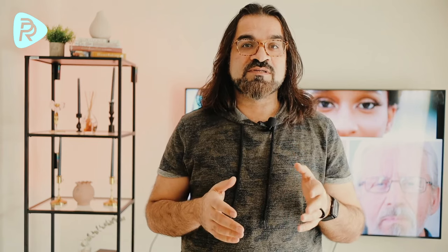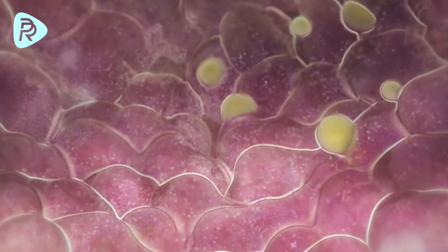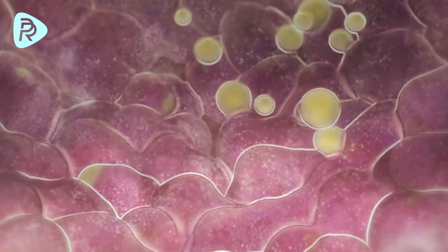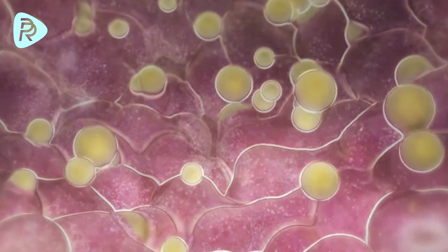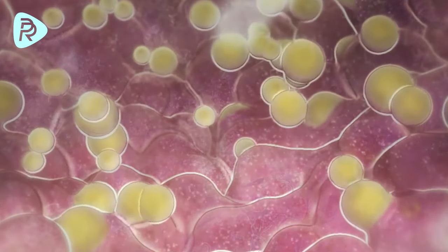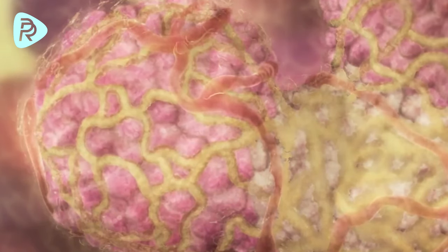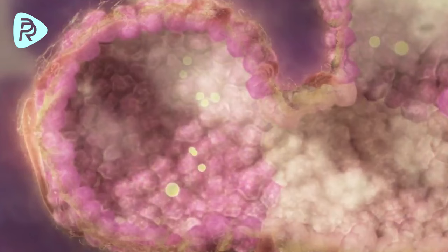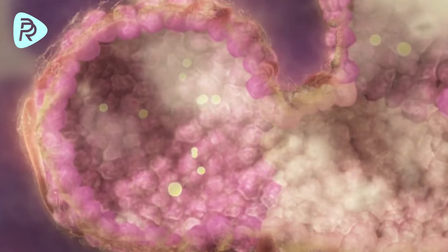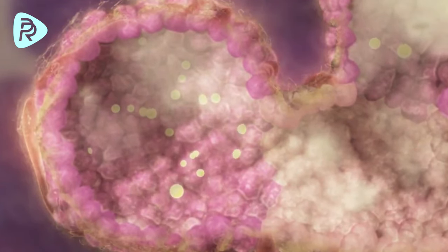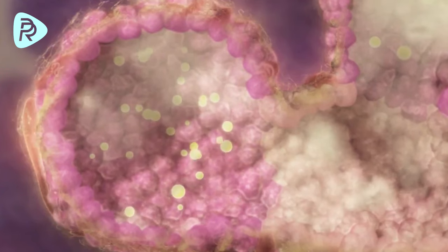In the Golgi apparatus, the proteins, fats, and sugars go through another chemical reaction and turn into milk. After this, just like the endoplasmic reticulum, the Golgi apparatus forms a soap-like foam, but this time they carry milk. These small milk-filled packs are carried to the outer membrane of the cell through the rail system.